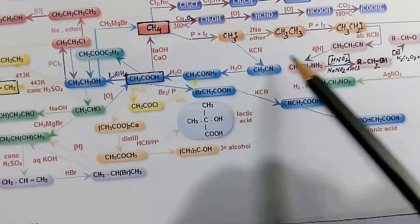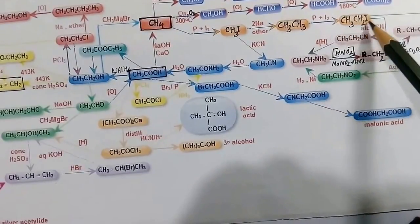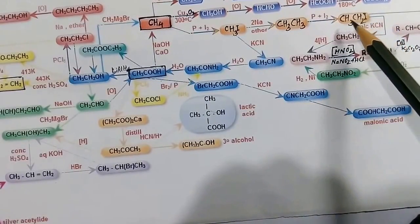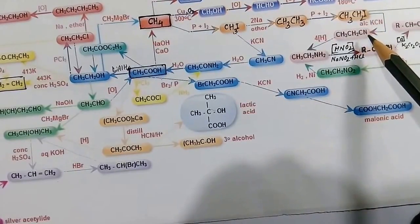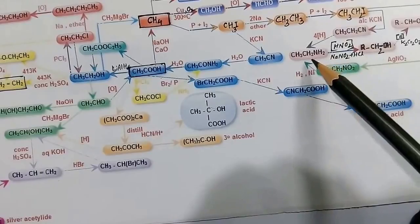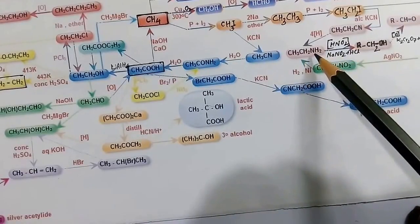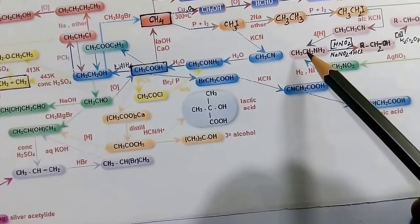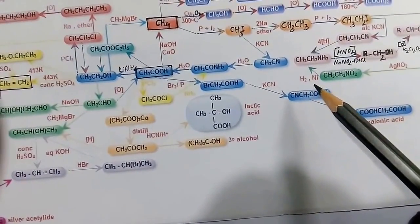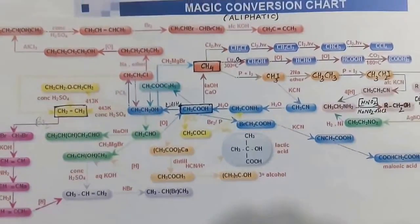Ethyl iodide treated with KCN gives ethyl cyanide — the number of carbons in the chain increases. That cyanide compound can be reduced to an amine: propylamine (note there is one additional CH₂ group). This amine compound can also be obtained from the nitro compound by reduction with hydrogen and nickel catalyst.